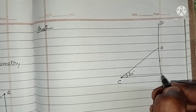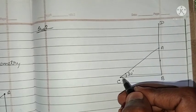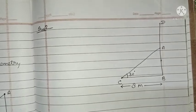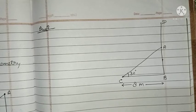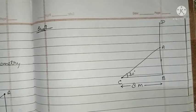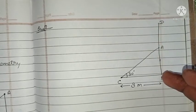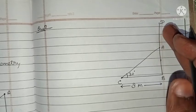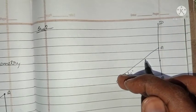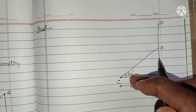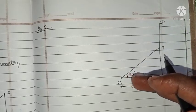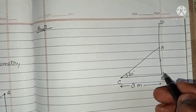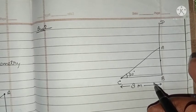The distance between the foot of the tree and the point where the top touches the ground is 8 meters, so BC equals 8 meters. We have to find the height of the tree BD.